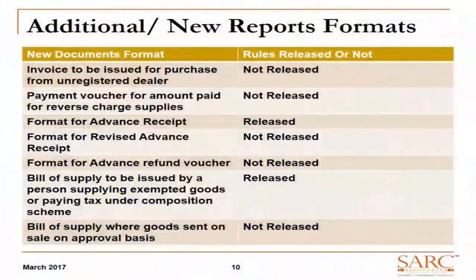There is a payment voucher for reverse charge supplies and advance receipts. Earlier we had the concept of advance invoices; now the system has changed and they have introduced advance receipts. There can also be revised advance receipts. If the service or goods are not delivered and the advance is refunded, we have an advance refund voucher. Bill of supply will be issued in cases where no tax is to be charged — for exempted supplies or supplies to a job worker or on a returnable basis. While most formats have been released, some like advance refund voucher formats are still awaited.